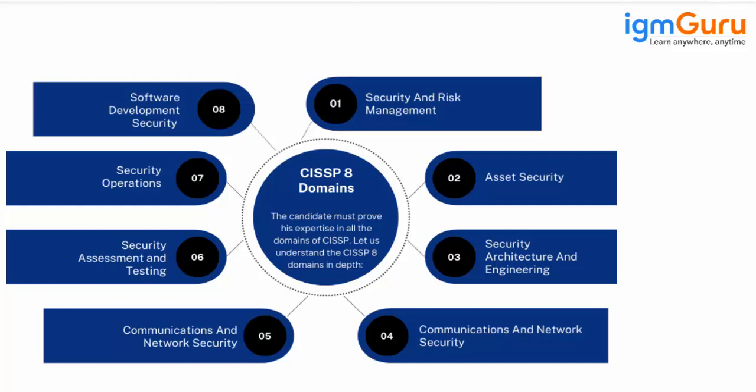Within these domains we have different concepts explained, such as security and risk management, asset security, and security architecture and engineering. Security compromises can happen from any area — whether you are managing software, network infrastructure, physical infrastructure, or certain technologies. In CISSP, we are going to discuss all the areas that can create a problem for the organization.